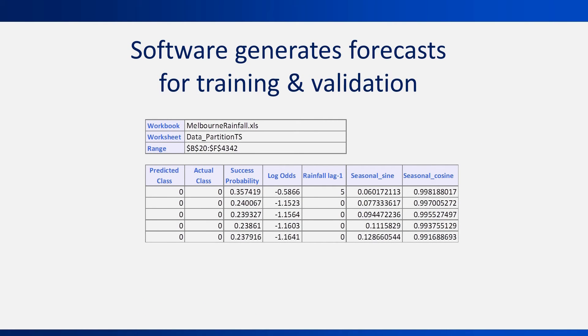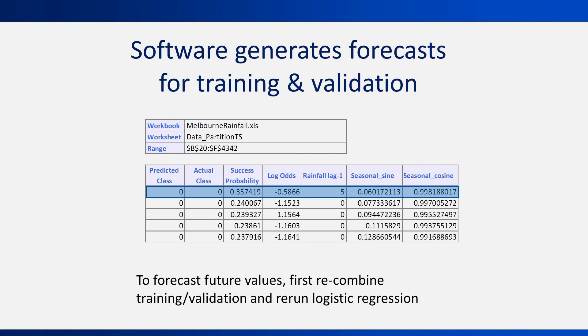Obviously, we don't need to compute the forecasts manually. Software typically gives you the forecasted probability and the binary forecast. Here is the result the software gives for January 3rd of 2010, which we just computed manually. We see the forecasted probability of 0.357. Note that to forecast beyond the validation period and into the future, we should remember to recombine the training and validation periods, then rerun the logistic regression, and then generate our forecasts.